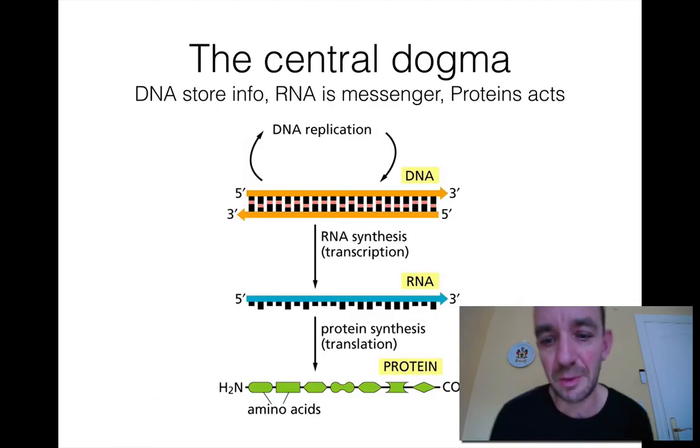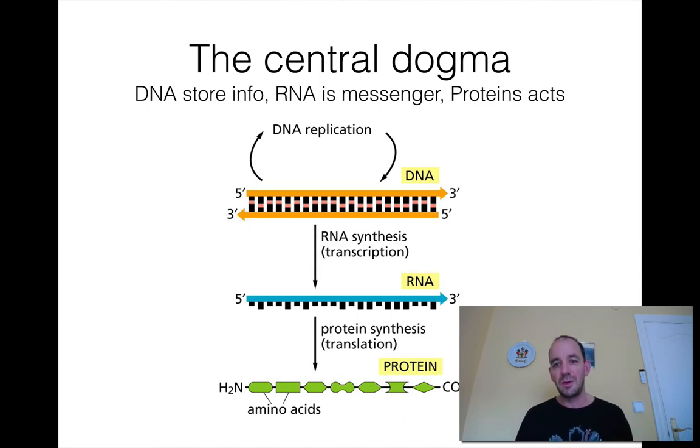But of course the central dogma basically says you have your DNA that can be replicated, and then you can synthesize RNA called transcription as a single-stranded molecule. You get an mRNA, and then this mRNA is used for translation by the ribosome into a protein that has different amino acids.